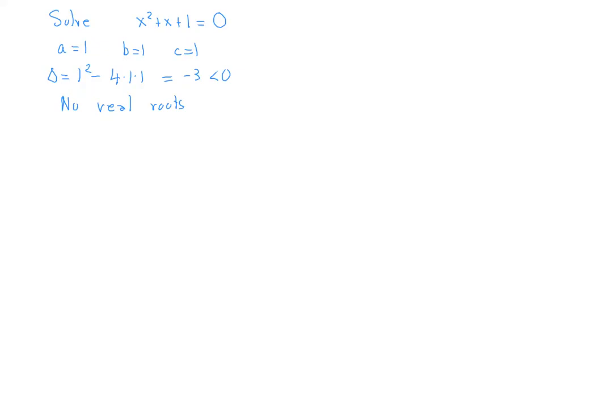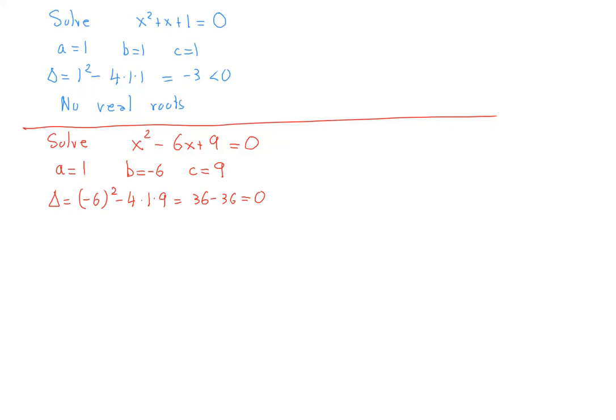Let's do now another one. Solve X squared minus six X plus nine is equal to zero. Again, please pause the video and give it a try and then restart it in order to see the solution. So here we have A equals one, B equals negative six, and C equals nine, which means that delta is equal to negative six all squared minus four times one times nine, which is 36 minus 36. And that's zero. So we have one double root.